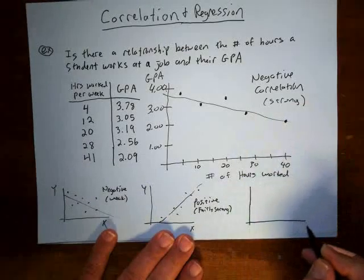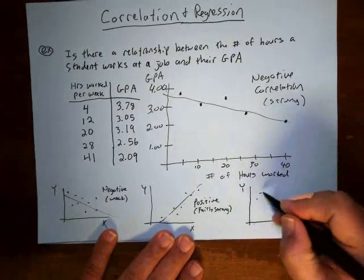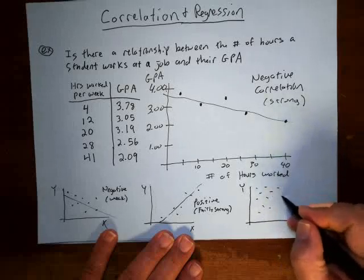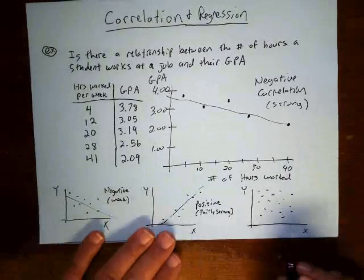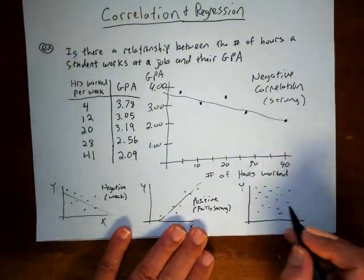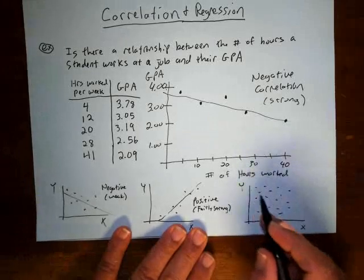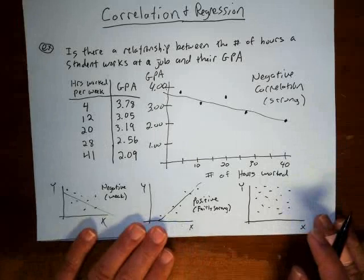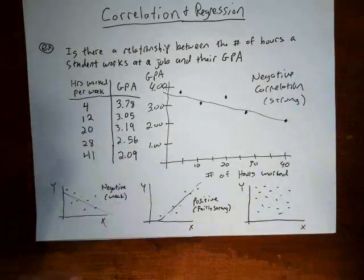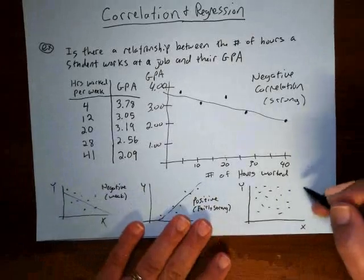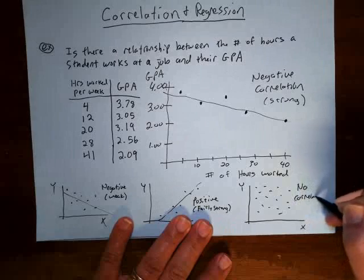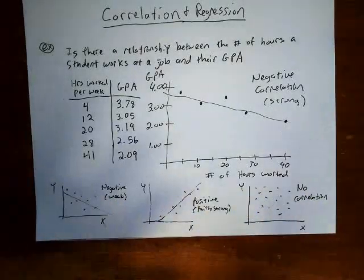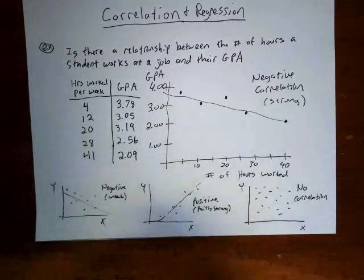Let me do one more example. If the ordered pairs are scattered throughout the plane with no general downward or upward trend, you just can't tell — they're randomly scattered. In that case, there would be no correlation between the two variables, or at least the correlation would be very, very weak.